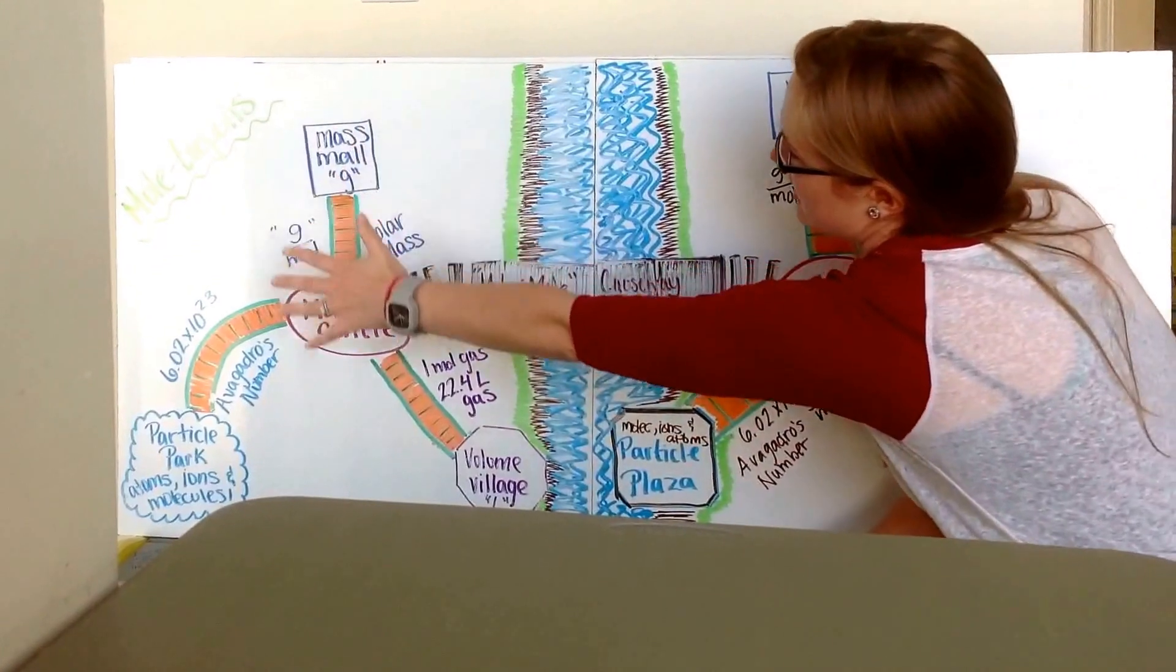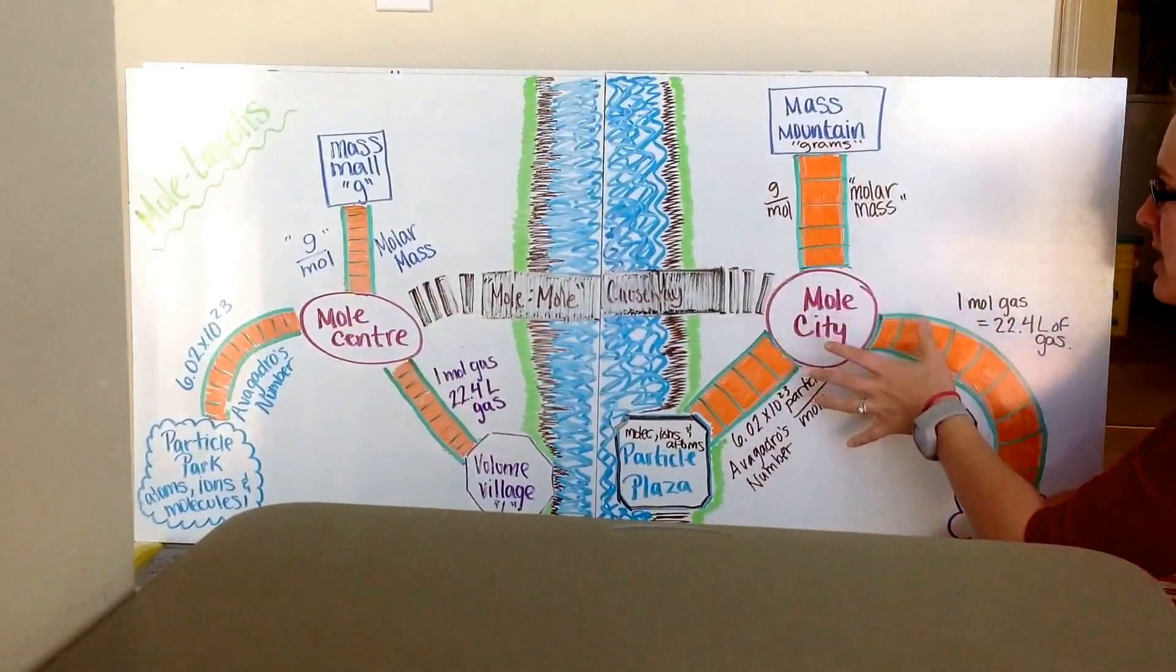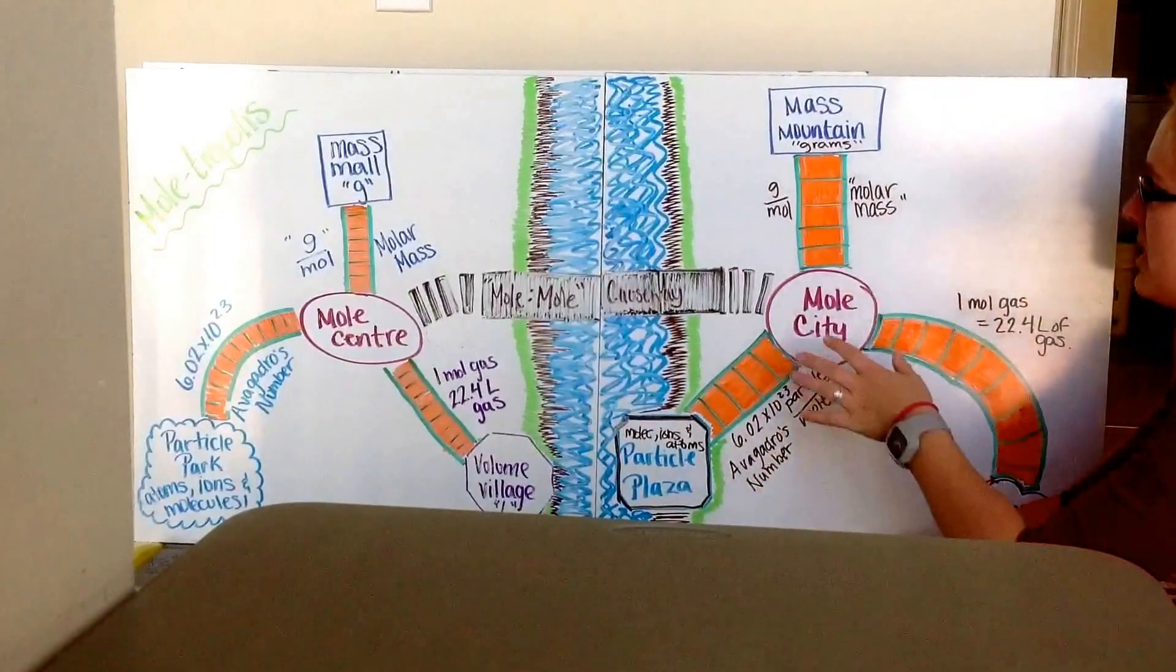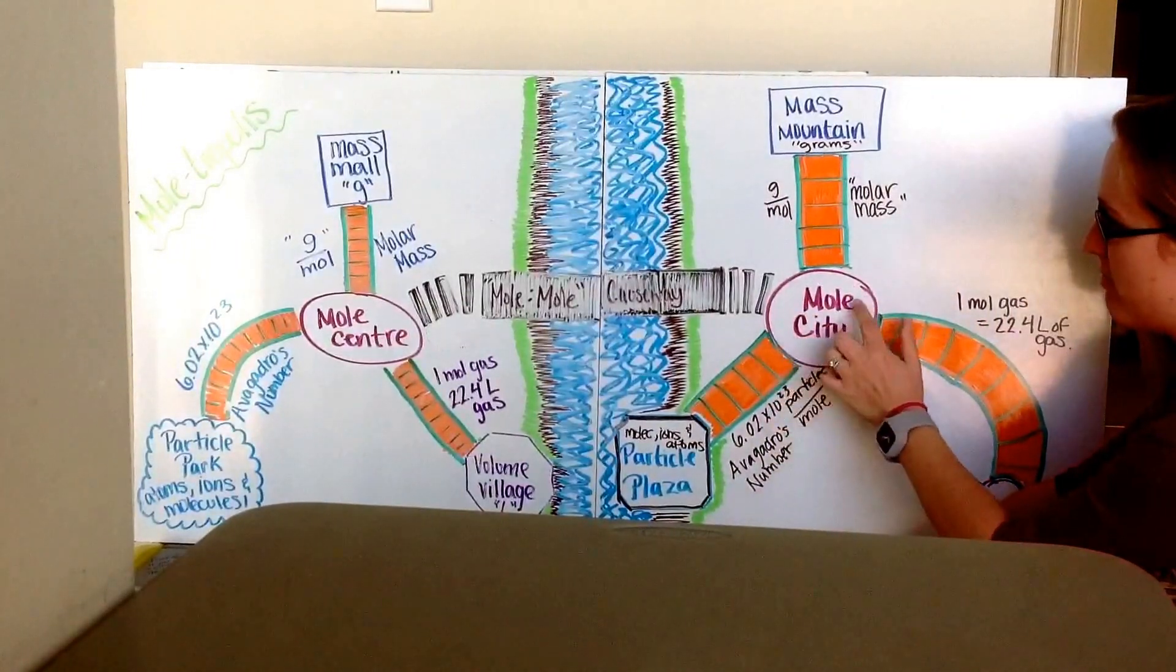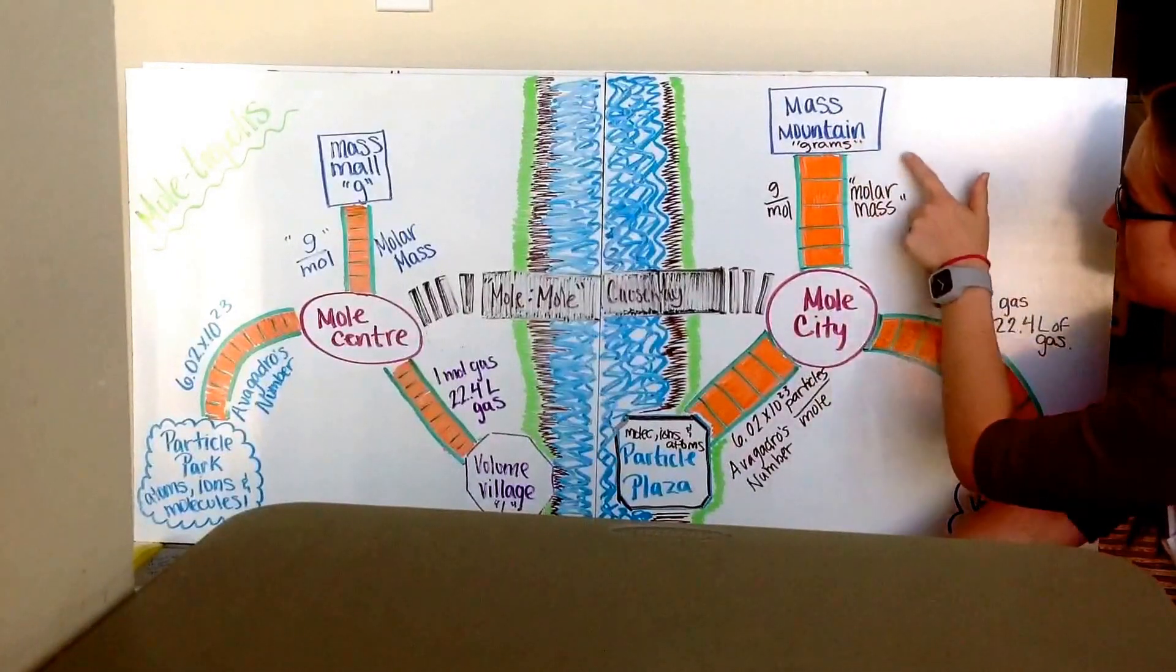So if we think about for every substance you have, you have one whole mole town and another mole town together. And so I just named them different things. So here's my second mole town. I have Mole City. I can go up to Mass Mountain. To get there, I have to take the molar mass.